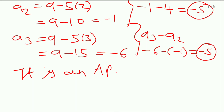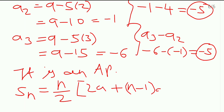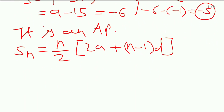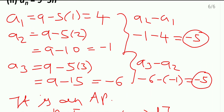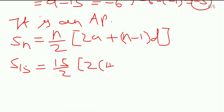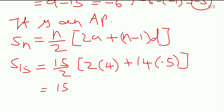Now we will find the sum of the first 15 terms. Writing down the formula for sum of n terms: S15 = 15/2 × [2a + (n−1)×d]. Substituting: first term a = 4, n−1 = 14, d = −5. So S15 = 15/2 × [2×4 + 14×(−5)] = 15/2 × [8 − 70].